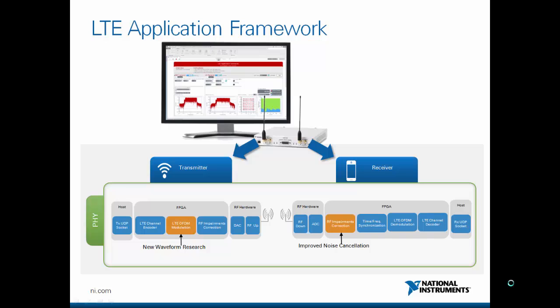This shows a basic block diagram of the LTE application framework. The transmitter and the receiver are both implemented on the FPGA, and the transmitter receives custom data from the host — in this case provided via a UDP socket. The FPGA performs the channel encoding and the OFDM modulation. The RF impairments correction is part of the RF driver, taken from the sample streaming project. It generates the time domain signal, which is fed to the digital-to-analog converter, and is finally upconverted and sent out as a real RF signal.